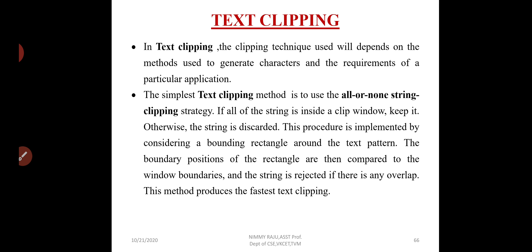If a line crosses the clip boundary — that is, if a line is partially in and partially out — we need to calculate the intersection points and save the line from the intersection point to the point which is inside the clip window. Points and lines inside the clip window are saved for display. Now, in the case of text clipping, we can use different clipping techniques.